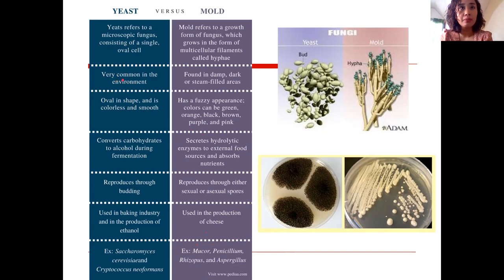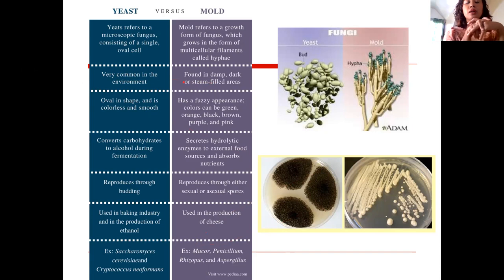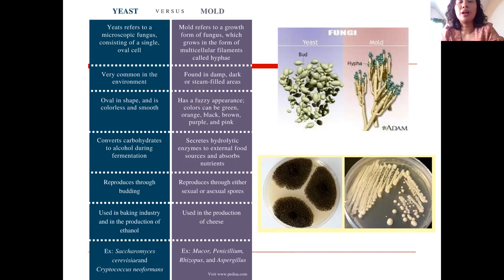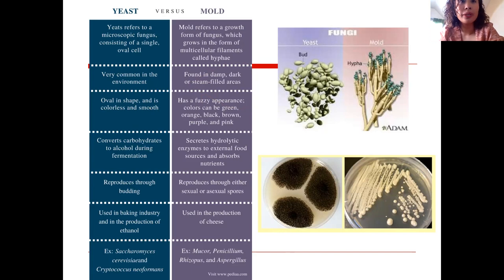Yeast are very common in the environment at any temperature. Molds are found in dark, steam-filled areas — like in Baguio City when it rains for a long time, you'd expect mold on your walls. Yeast are oval in shape, colorless, and smooth. Molds have a fuzzy appearance with colors ranging from green and others. Like a teacher once said, molds have that fuzzy appearance.